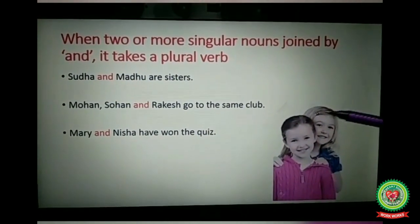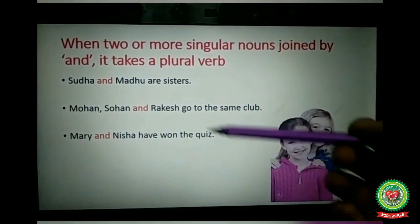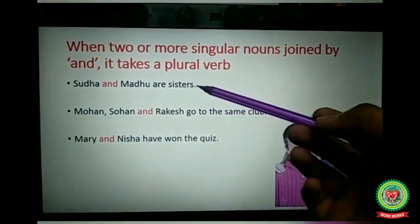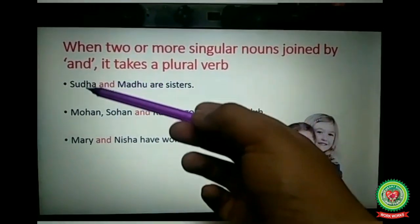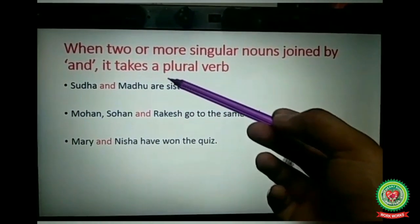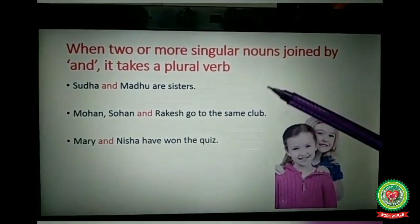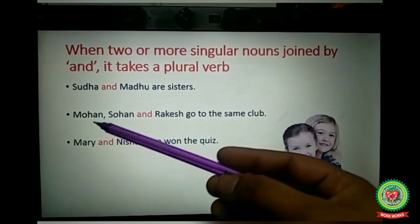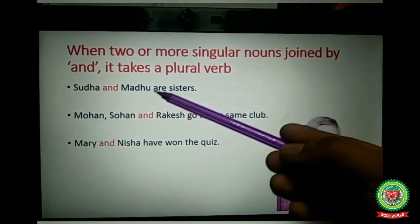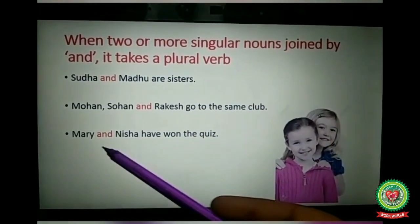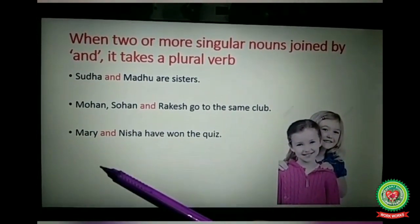Rule: when two or more singular nouns are joined by 'and,' the verb takes a plural form. Example: 'Sudha and Madhu are sisters' — two singular nouns joined by 'and,' so we take the plural verb 'are.' Next: 'Mohan, Sohan, and Rakesh go to the same club' — three singular nouns joined by 'and,' so we take the plural verb 'go.' Next: 'Mary and Nisha have won the quiz' — two singular nouns joined by 'and,' so we take the plural verb 'have.'